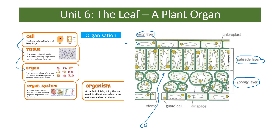At the bottom of the leaf we have stomata — the holes surrounded by guard cells, which can open and close depending on whether it's night or day, or if the plant needs to preserve water.